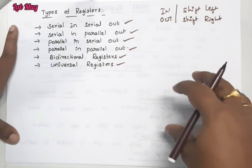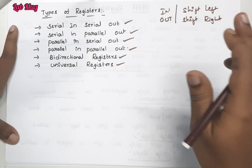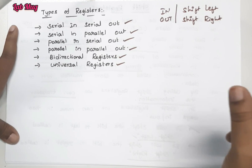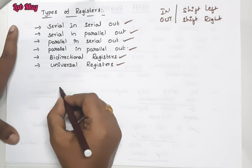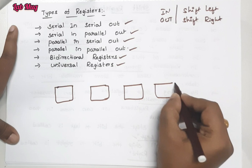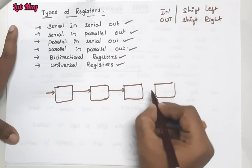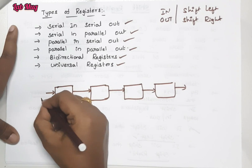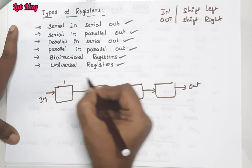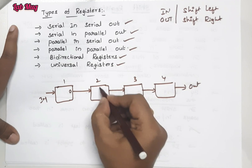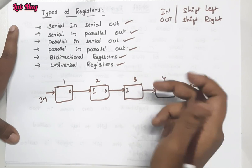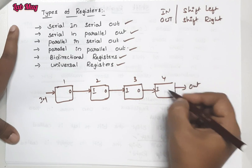From these register types, first we connect the flip-flops and see how data is passed — shift left passes data one way, shift right passes it the other way. For example, with four flip-flops connected continuously, input starts at the first flip-flop. The output of the first becomes input to the second, the second's output goes to the third, and the third's output goes to the fourth.